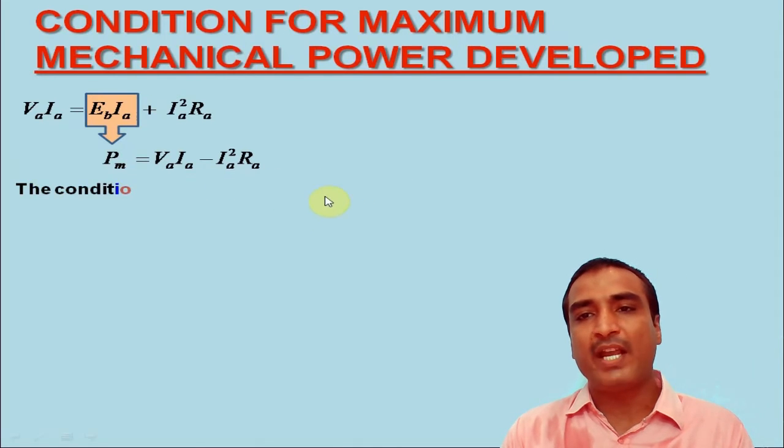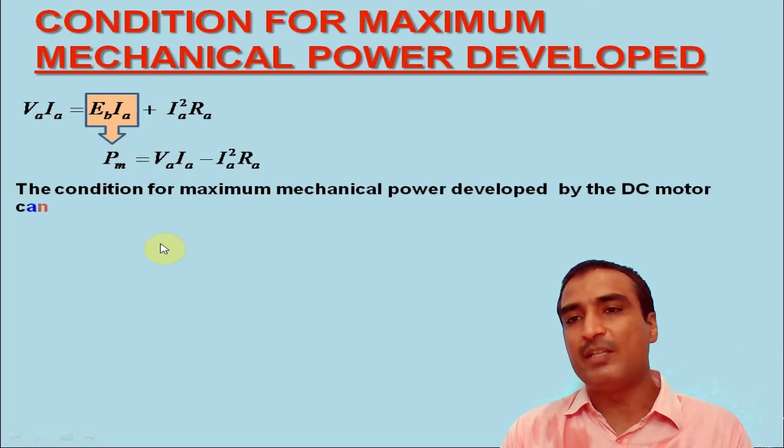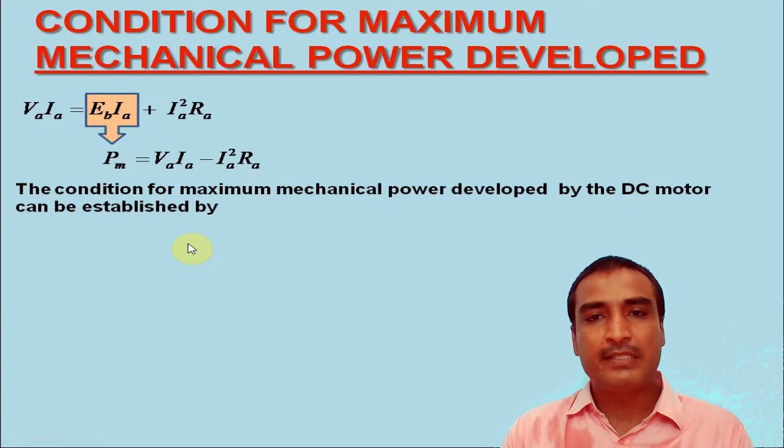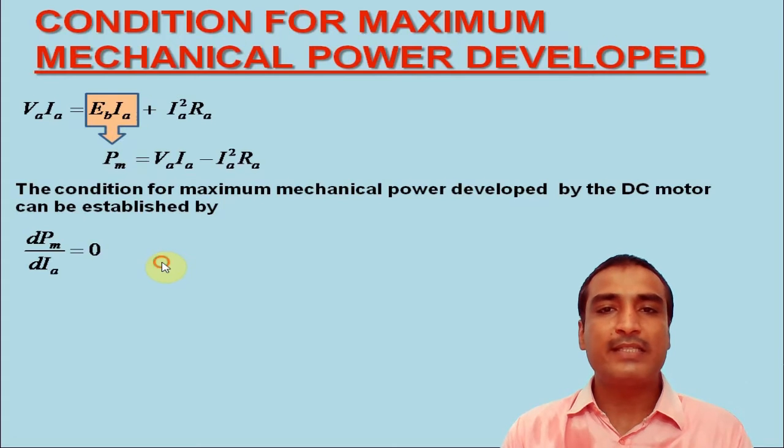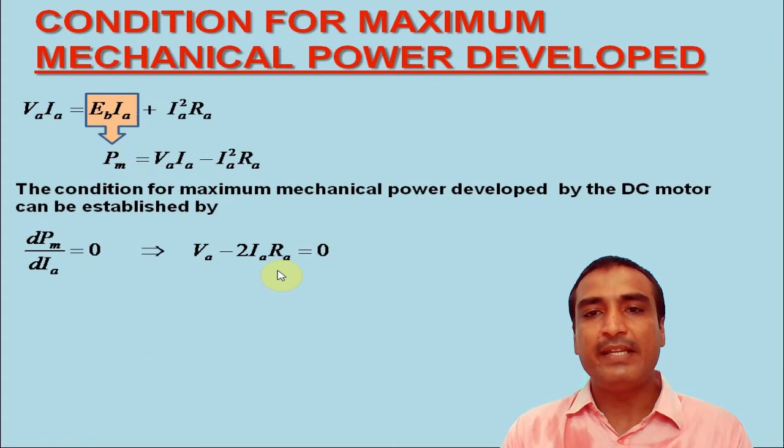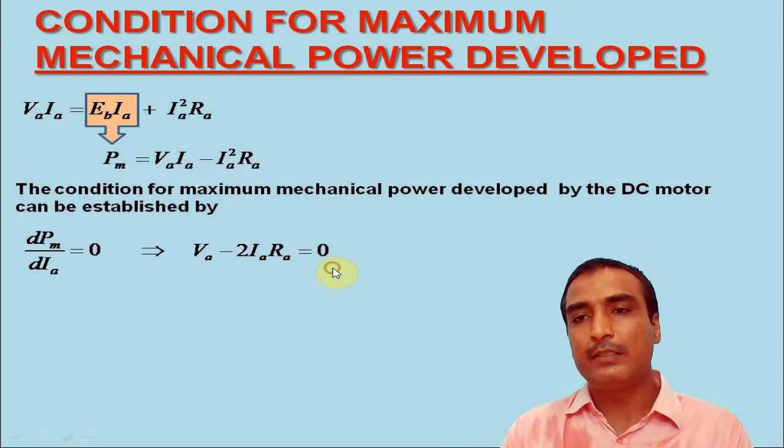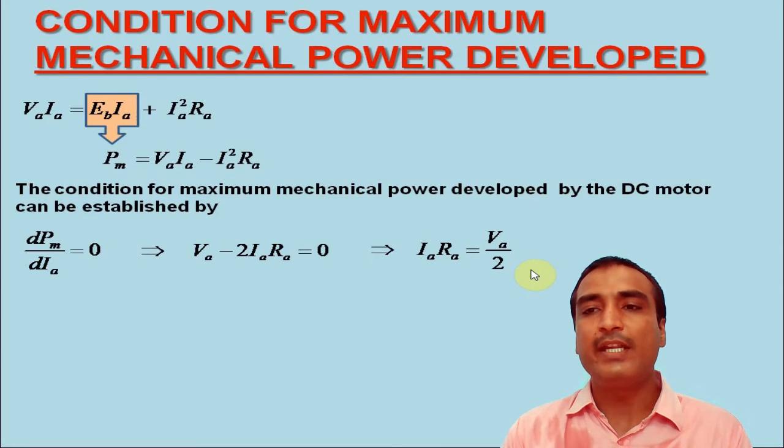Now, the condition for maximum mechanical power developed by the DC motor can be established by putting the first order derivative of PM with respect to armature current IA equal to 0. This implies VA minus 2 IA RA is equal to 0. This would result in IA RA is equal to VA by 2.